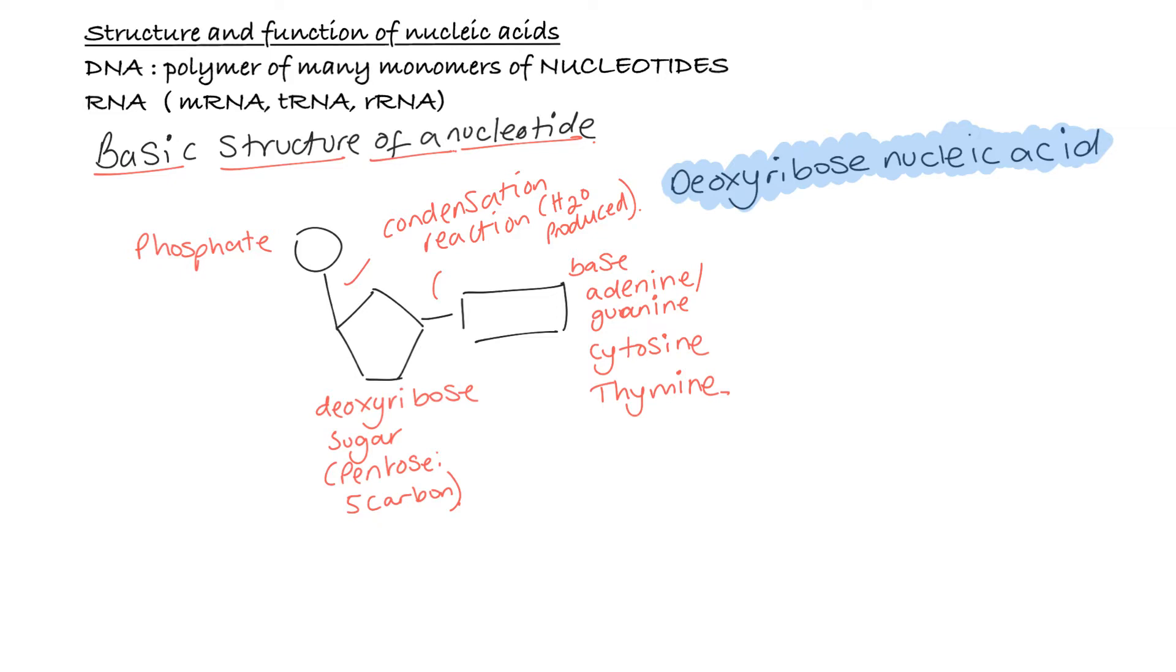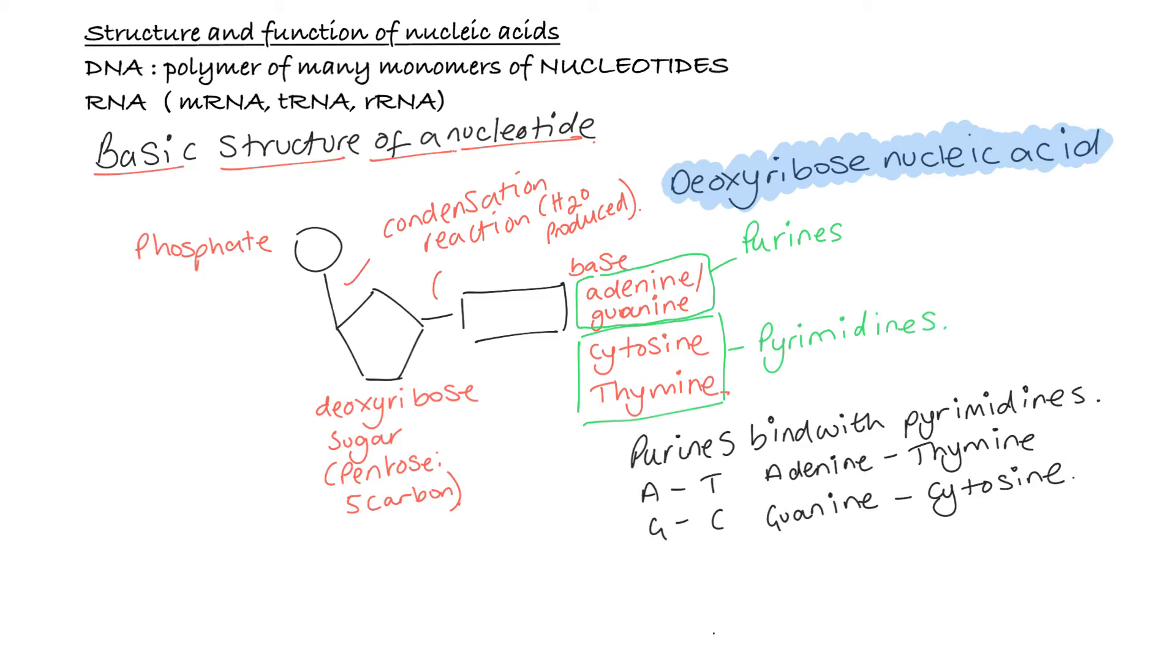The bases can be put into two groups. Adenine and guanine, which are purines. And thymine and cytosine, which are pyrimidines. Purines always bind with pyrimidines. Now, what does this term purine and pyrimidine mean? It's to do with their shape. Both types contain nitrogen.